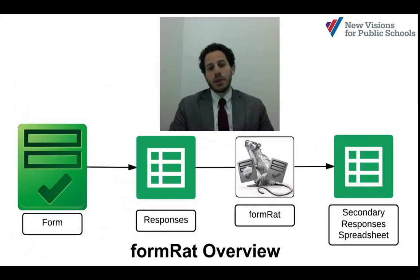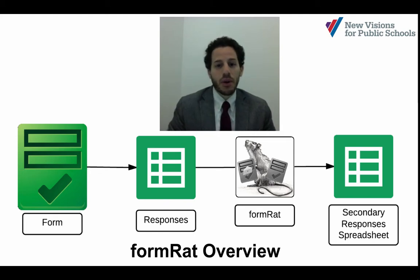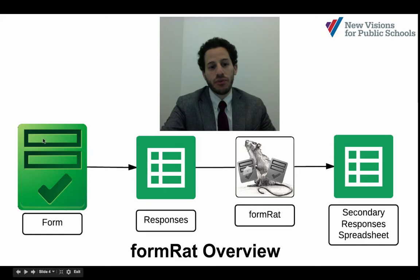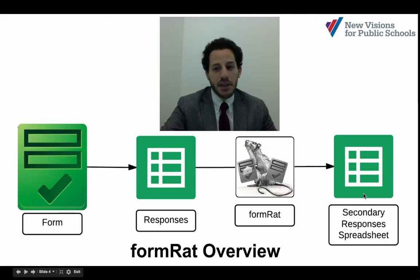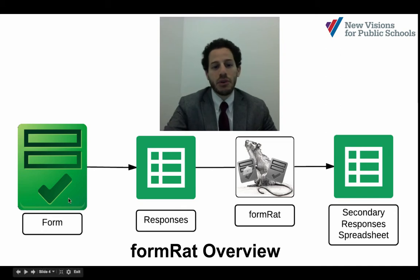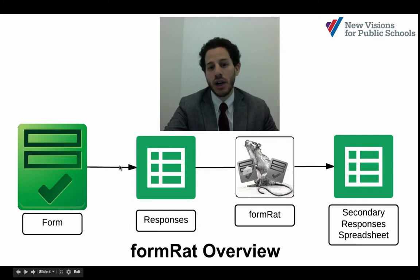FormRat is very simply attached to a Google spreadsheet that also contains a Google Form. Typically, a Google Form will save a response and that response is displayed in a spreadsheet. What FormRat will do is take that response as soon as it comes in and copy it to a secondary spreadsheet — which could have a form attached to it or not — moving that data in basically real time to another location.